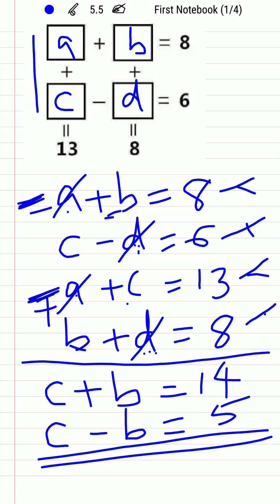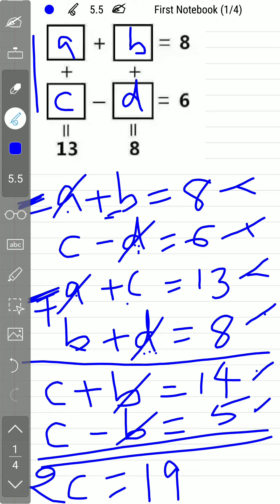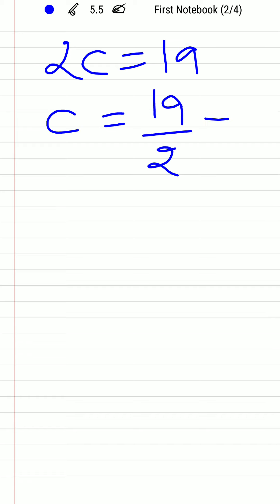Adding these two new equations — c + b = 14 and c − b = 5 — the b terms cancel, leaving 2c = 14 + 5 = 19. Therefore c = 19/2, which equals 9.5.